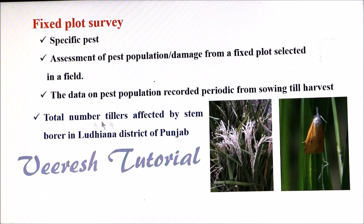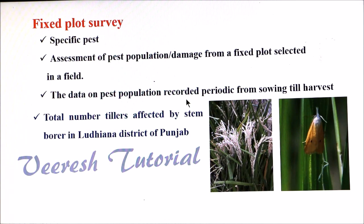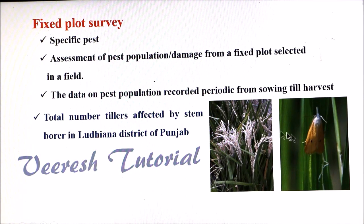In a fixed plot survey, the assessment of pest population or damage can be done for a specific pest from a fixed plot selected in a field. The data on the pest population is recorded periodically from sowing till harvesting. If you would like to know the pest status of a specific pest in a specific area, then we will go for fixed plot survey — for example, total number of tillers affected by stem borer in Ludhiana district of Punjab.